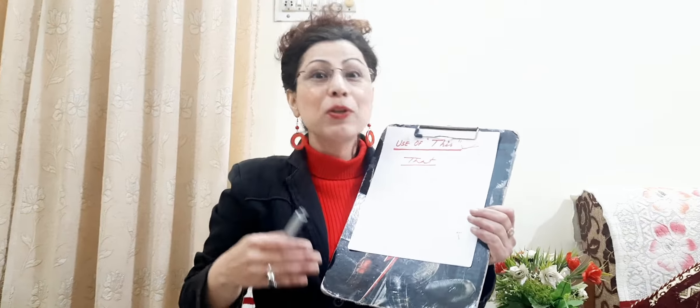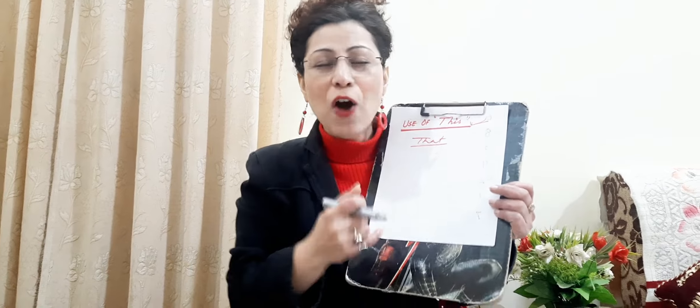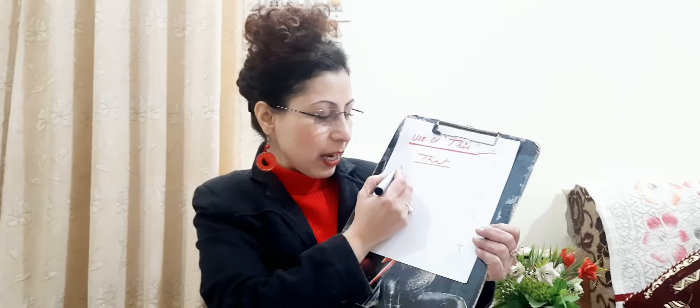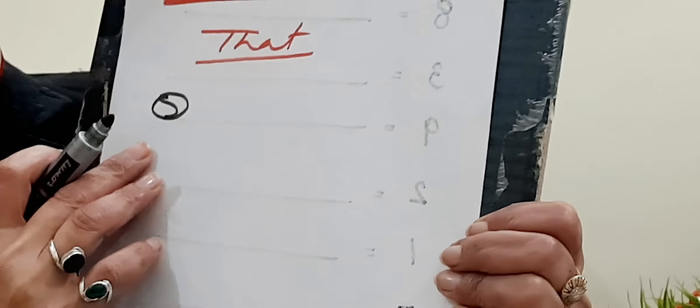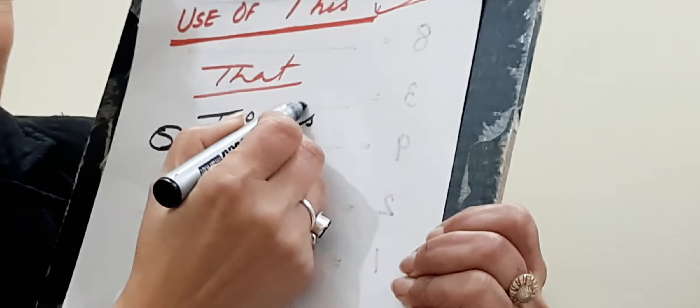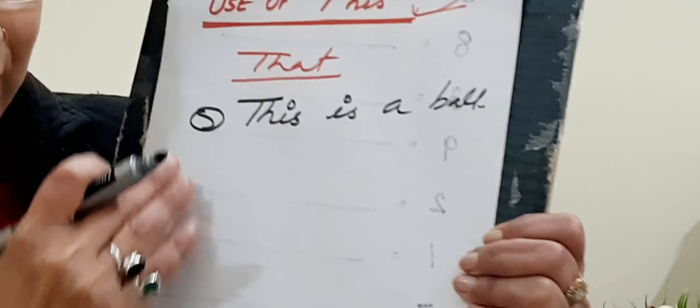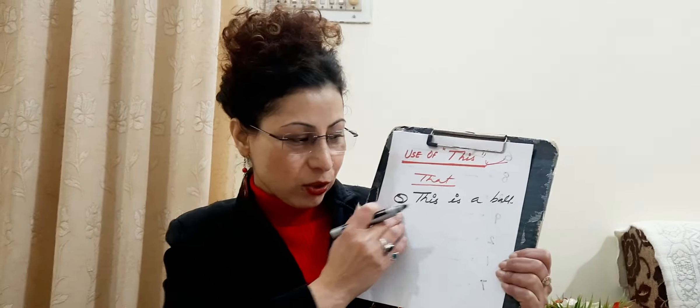I understand you are all young learners. You may not be able to recognize whether the objects drawn are near or far — whether to use 'this' or 'that'. So today I am going to give you a small idea of how to recognize whether to use 'this' or 'that'. It is very easy. Suppose I write a sentence — before that, whenever things are near to us, that time we will say 'this'.